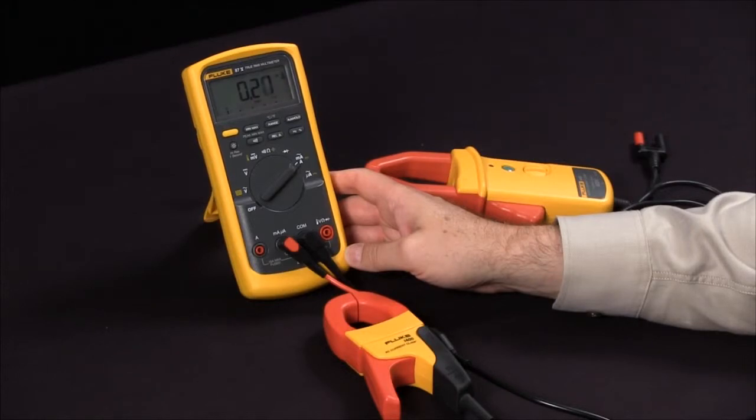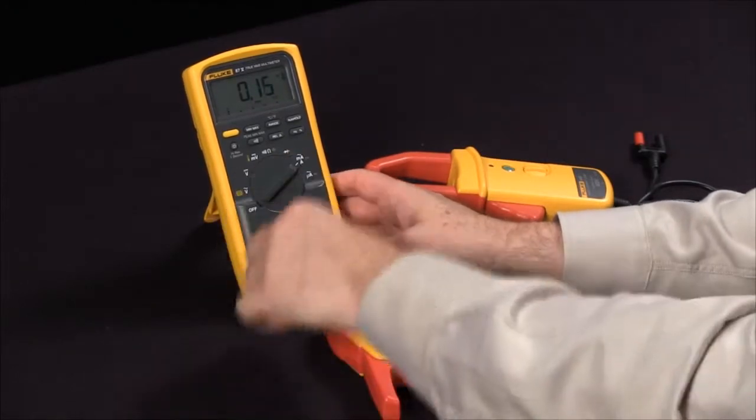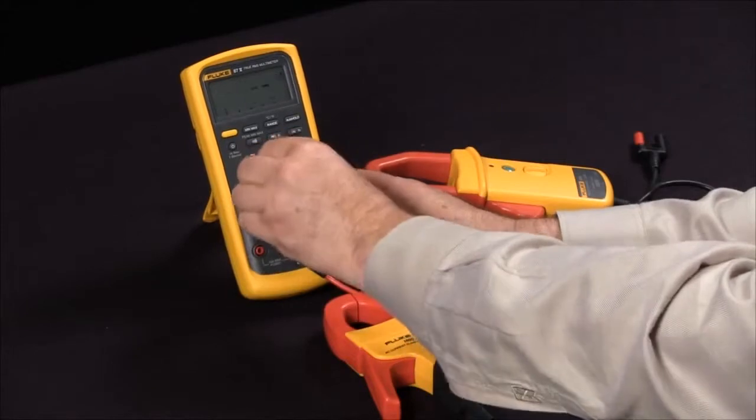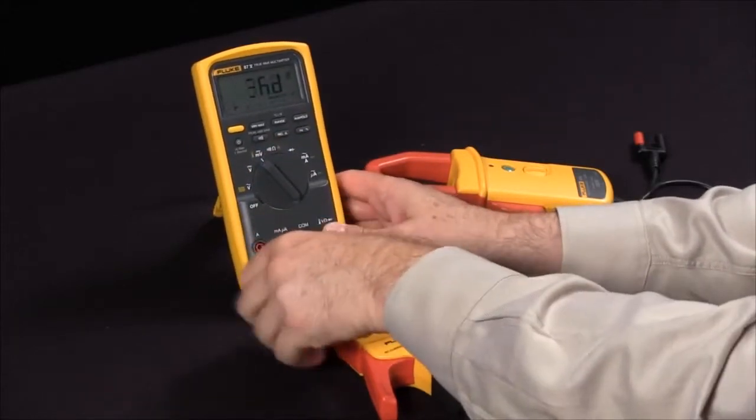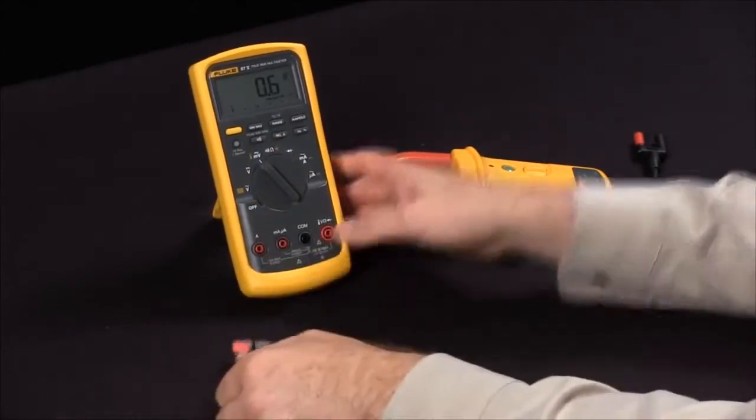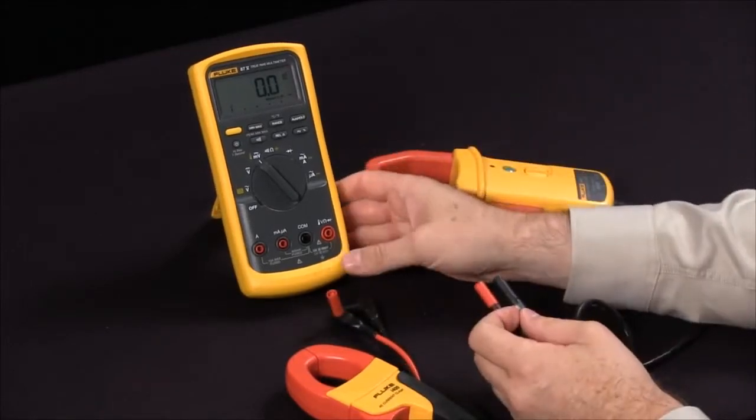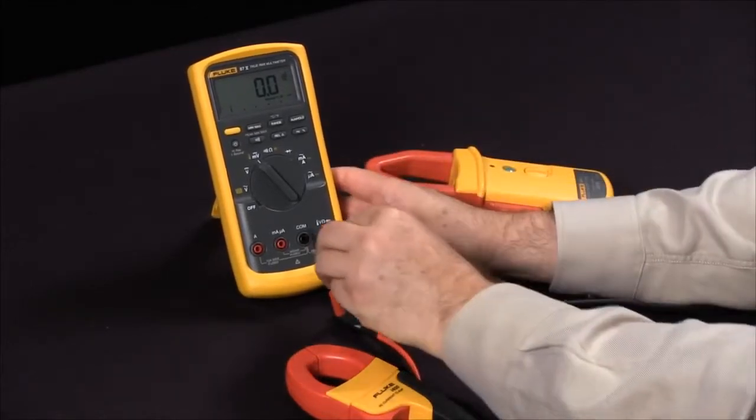When you're measuring AC and DC, it's a little different setup. What you want to do is set your meter to millivolts, unplug the jacks, and in this case, you're going to go into your voltage as well as your common inputs.